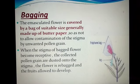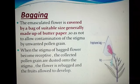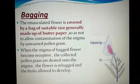So these are the two methods: first, emasculation in which we remove the anther part; and second, bagging in which we cover the female part and only allow the pollen which we want — which is good for the plant. This is all for today, thank you.